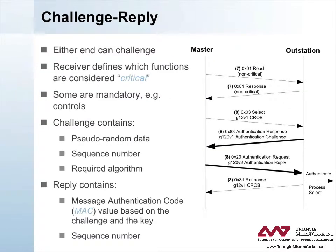DNP3 secure authentication is by default based on a challenge-reply mechanism. Either the master or the outstation can challenge any normal DNP3 message it receives. The receiver of the message can determine that any DNP3 function is critical, requiring authentication. However, the specification does specify that certain functions must be considered critical, such as control operations: select, operate, direct operate, etc.